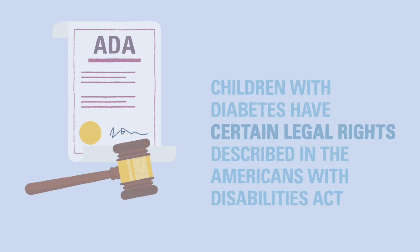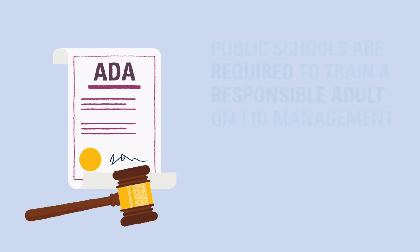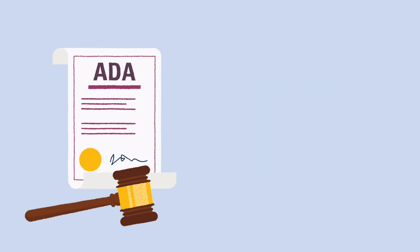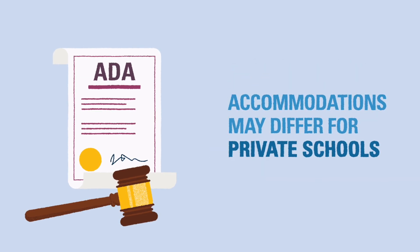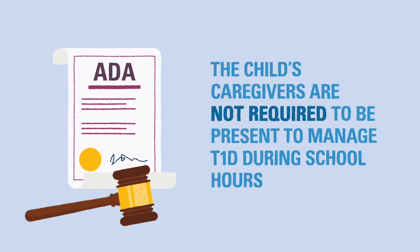Children with diabetes have certain legal rights as described in the Americans with Disabilities Act. Public schools are required by law to train a responsible staff member to assist the child with their diabetes management. If a child attends a private school, accommodations may differ. The child's caregivers are not required to be physically present to manage the child's diabetes during school hours.